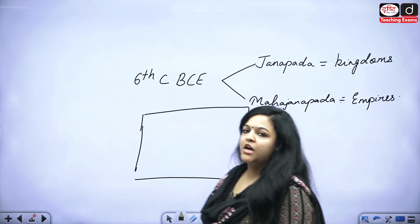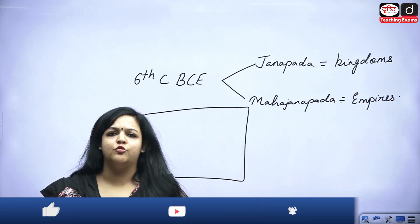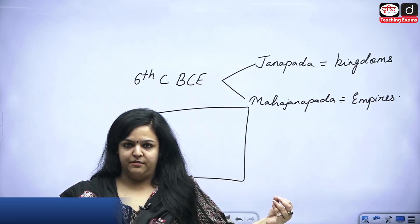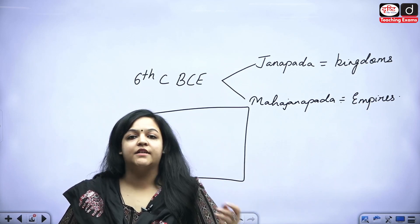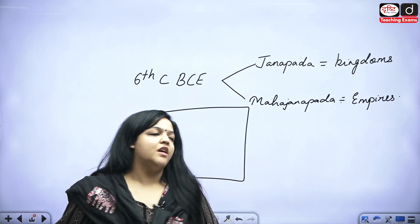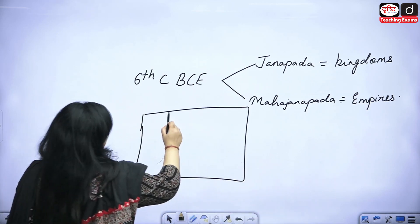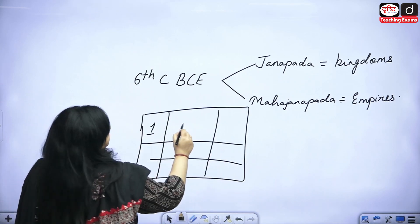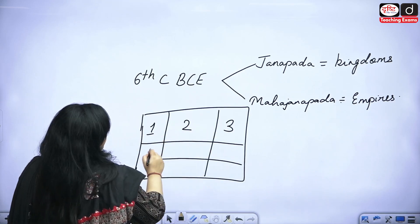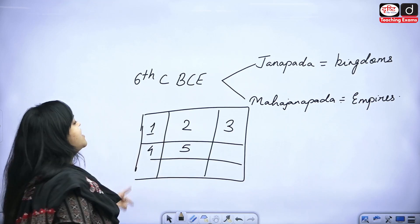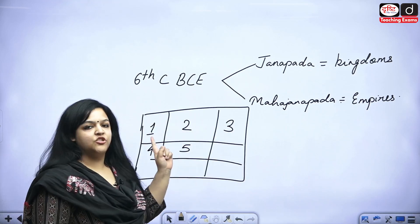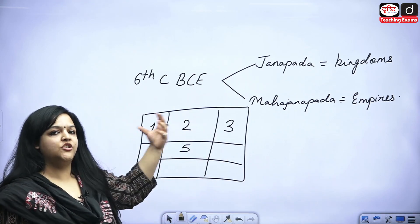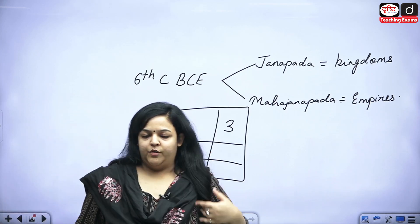So, Mahajanpads are huge empires, and the small kingdoms which make up a Mahajanpad are your Janpads. All of these together — Janpad one, two, three, four, five — make one Mahajanpad, or an empire.